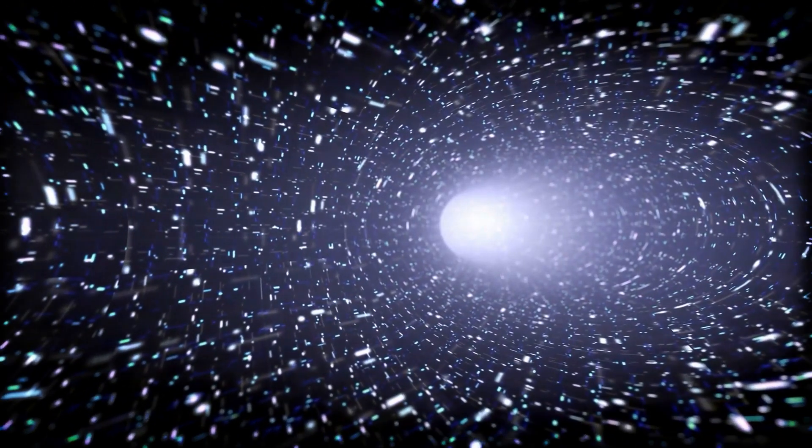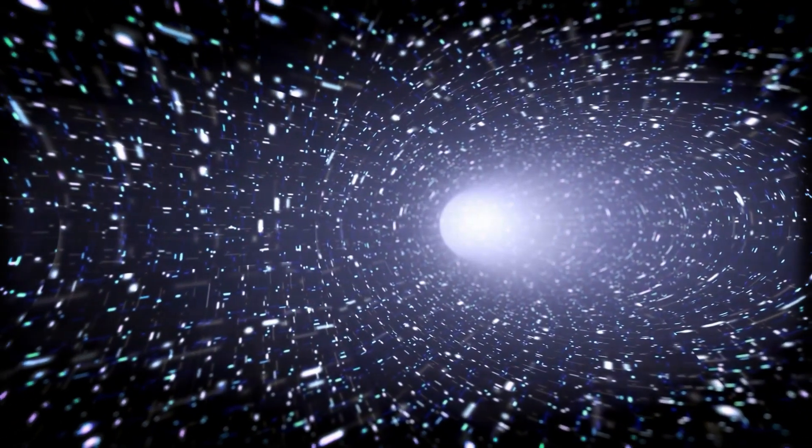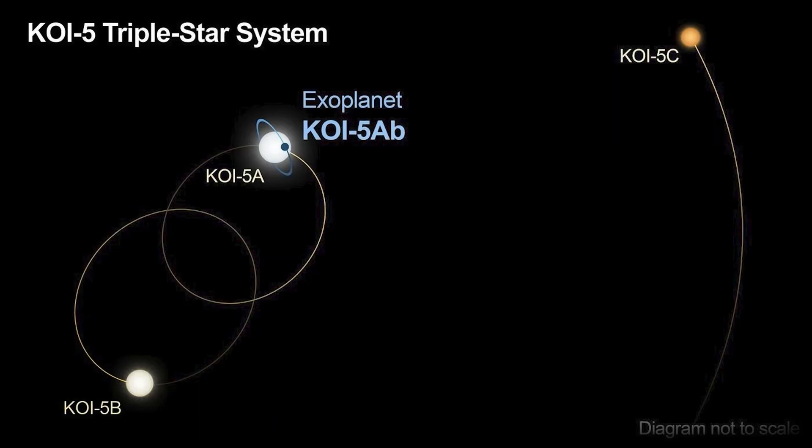Well, for two reasons. First, Kepler was collecting a mind-blowing amount of data, so things could easily slip through the cracks. Second, astronomers realized the star Koi 5A, the one the planet was supposedly orbiting, wasn't alone.